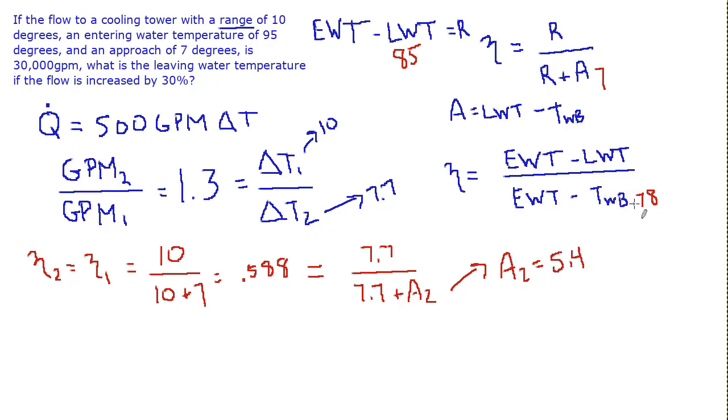And the wet bulb temperature hasn't changed. So we can use this formula and say that the approach is 5.4, which equals the leaving water temperature minus the wet bulb. So we add 78 to the other side, and the leaving water temperature equals 83.4.